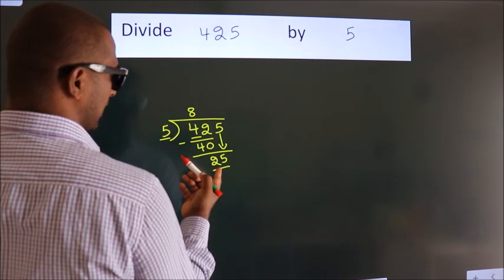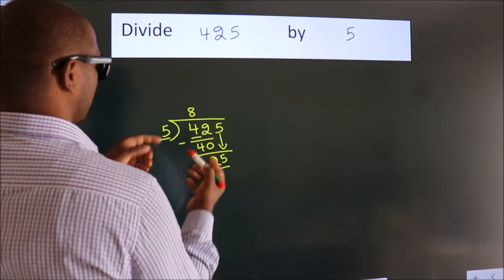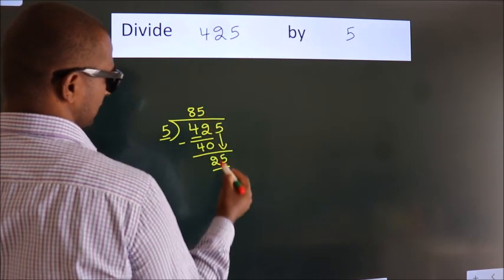When do we get 25? In the 5 table. 5 fives, 25.